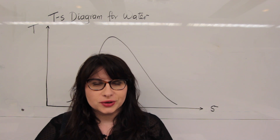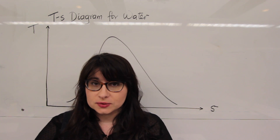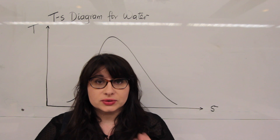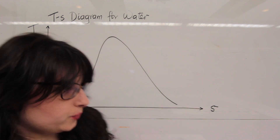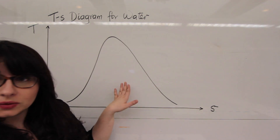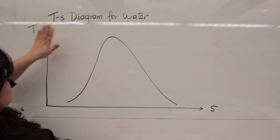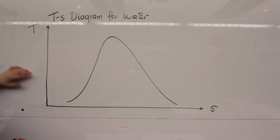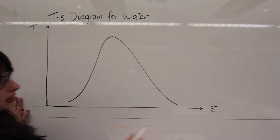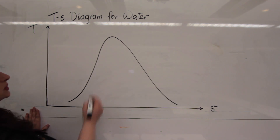Let's start with some introductory concepts around the TS diagram. This is what it looks like — this is the TS diagram for water. We have the y-axis: temperature, and the x-axis: entropy, hence TS.